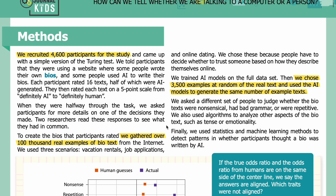When they were halfway through the task, we asked participants for more details on one of their decisions. Two researchers read these responses to see what they had in common. To create the bios that participants rated, we gathered over a hundred thousand real examples of bio text from the internet. We used three scenarios: vacation rentals, job applications, and online dating. We chose these because people have to decide whether to trust someone based on how they describe themselves online. We trained AI models on the full dataset, then chose 3,500 examples of real text at random and used the AI models to generate the same number of example texts. We asked a different set of people to judge whether the bio texts were nonsensical, had bad grammar, or were repetitive.